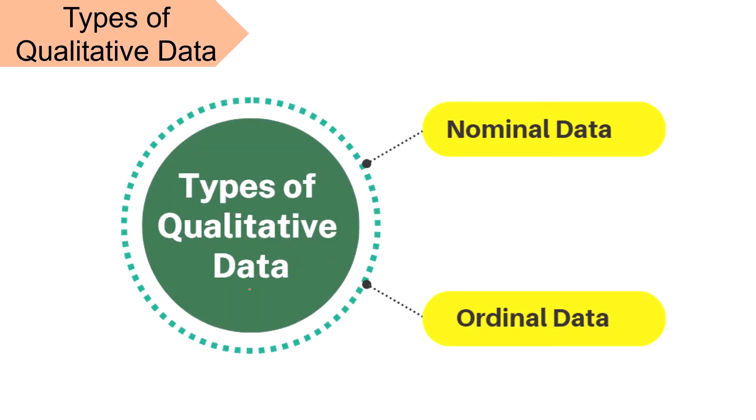There are two types of qualitative data: nominal data and ordinal data. The data used to label something without assigning any numerical value is nominal data. Whereas the data organized and categorized in a particular order is called ordinal data.